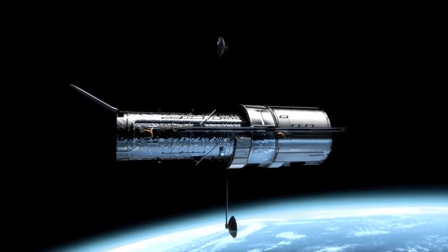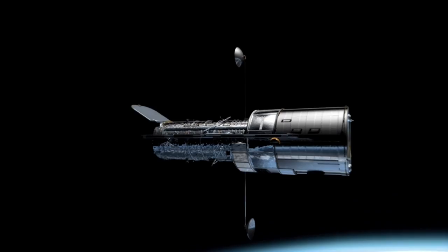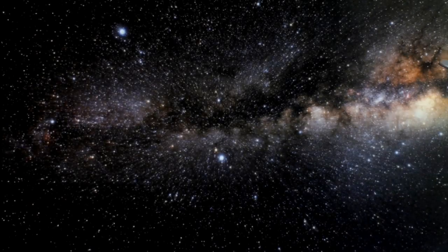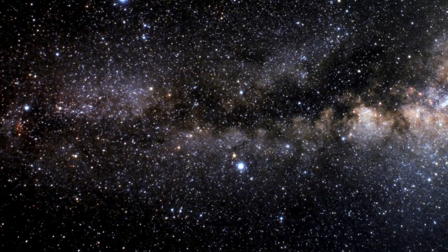Using the Advanced Camera for Surveys, or ACS, the Hubble Space Telescope has recently observed a fascinating large gaseous planet around the star HD 189733.